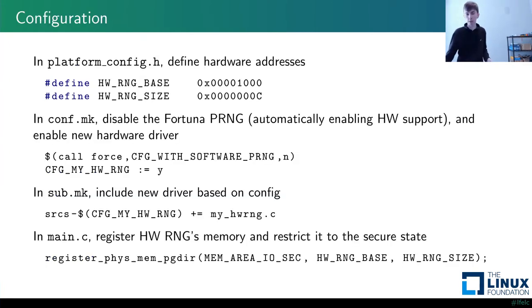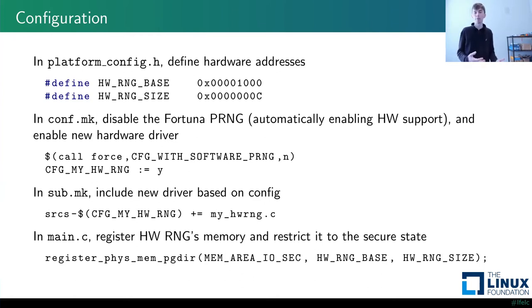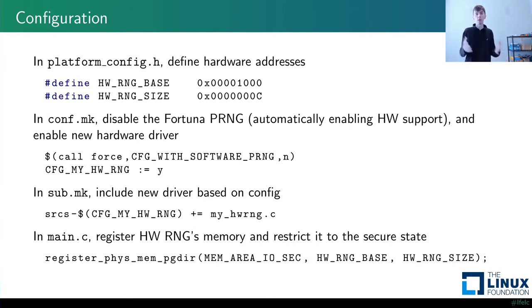To configure our build: add hardware RNG addresses to platform-config, then disable the software random number generator and switch to hardware. If we turn off the CFG_WITH_SOFTWARE_PRNG option, the build system automatically switches to the hardware RNG framework. Then enable our driver implementing those three functions, it gets linked in correctly. This is how you register your hardware RNG's physical address with the MMU as a secure mapping rather than a non-secure or shared mapping.